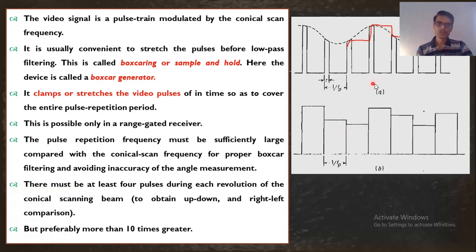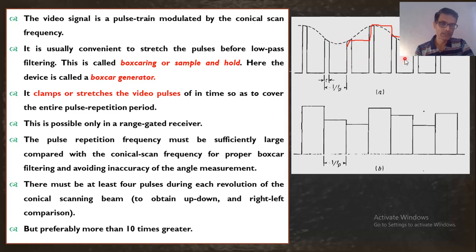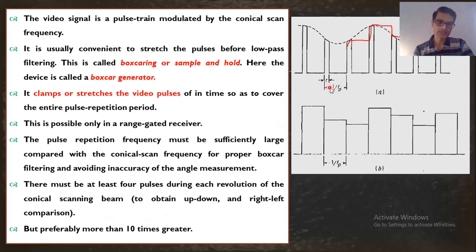The sample-and-hold or boxcar circuit is useful in scanning radars. The requirement is that within one scanning frequency period, there must be a minimum of four pulses. With four pulses between negative peaks, generating and measuring the angle error signal becomes accurate. Ten pulses per scanning period is even better for accuracy. Therefore, the PRF must be at least four times the conical scanning frequency, and ideally ten times for more accurate angle measurement.